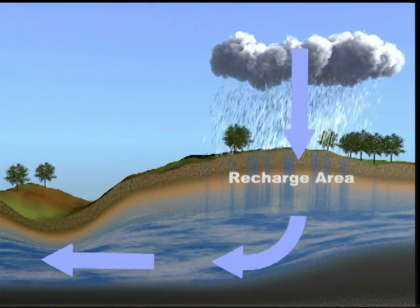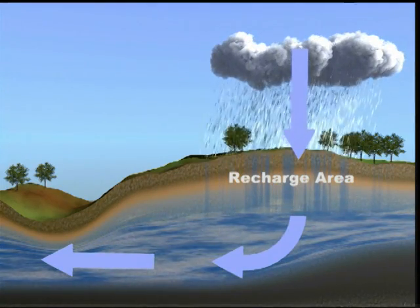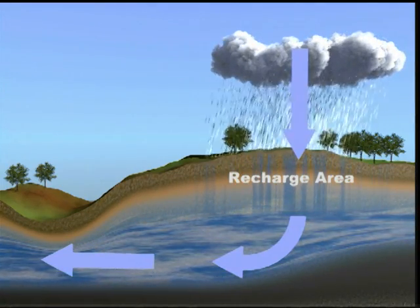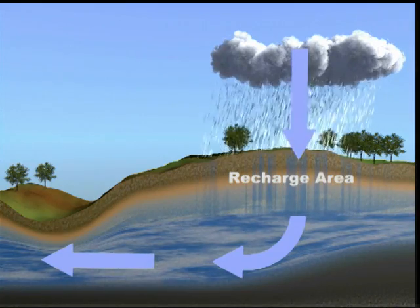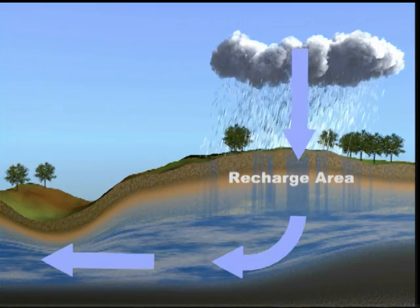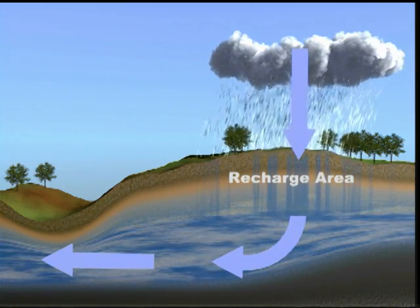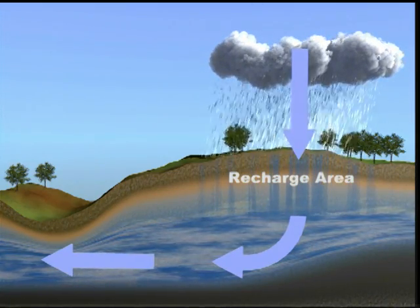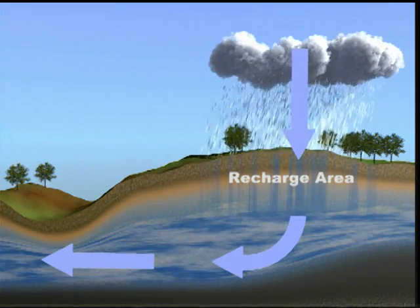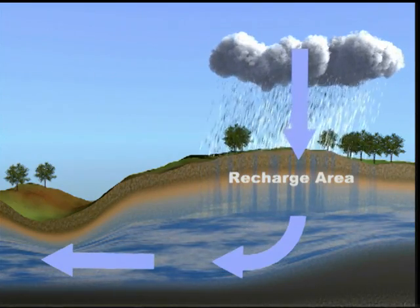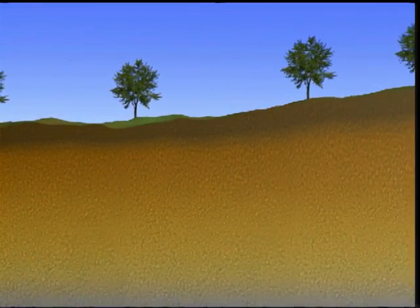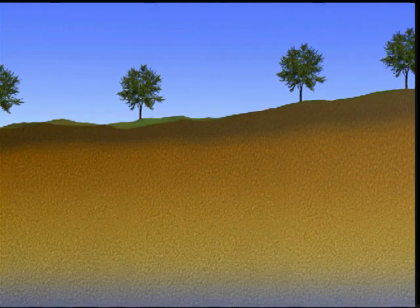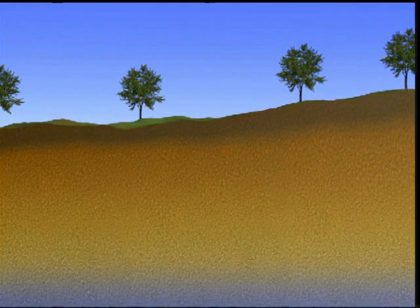Without recharge, or movement of the groundwater, the aquifer would become brackish through dissolution of the minerals in the ground. This is why deeper aquifers have more dissolved solids. Groundwater occurs in aquifers under two different conditions.